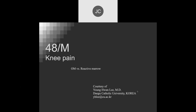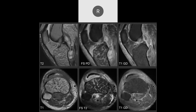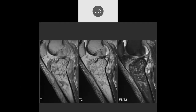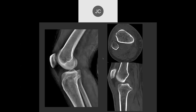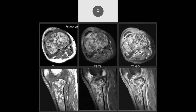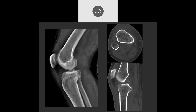A 48-year-old with knee pain — concern for osteomyelitis versus reactive marrow — shows heterogeneous marrow with a characteristic worm-like appearance on MRI. Plain films and CT add little. This was acute osteomyelitis.